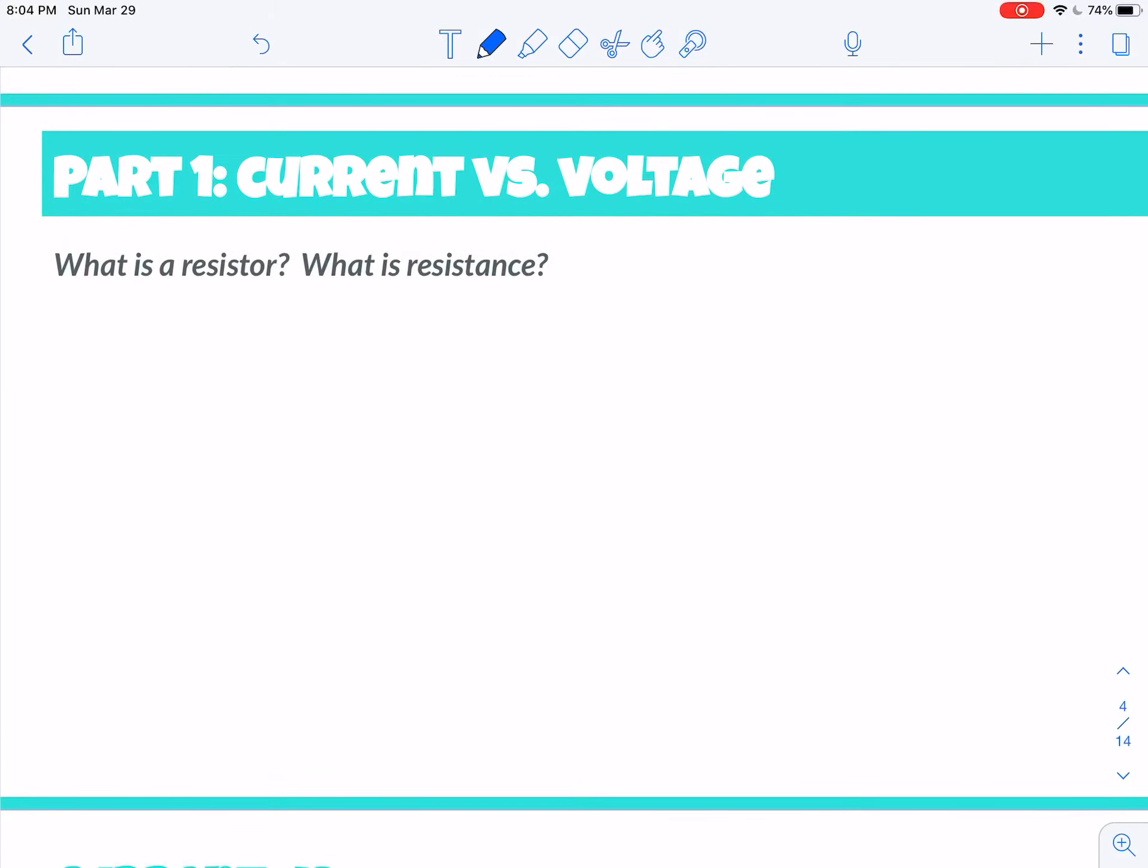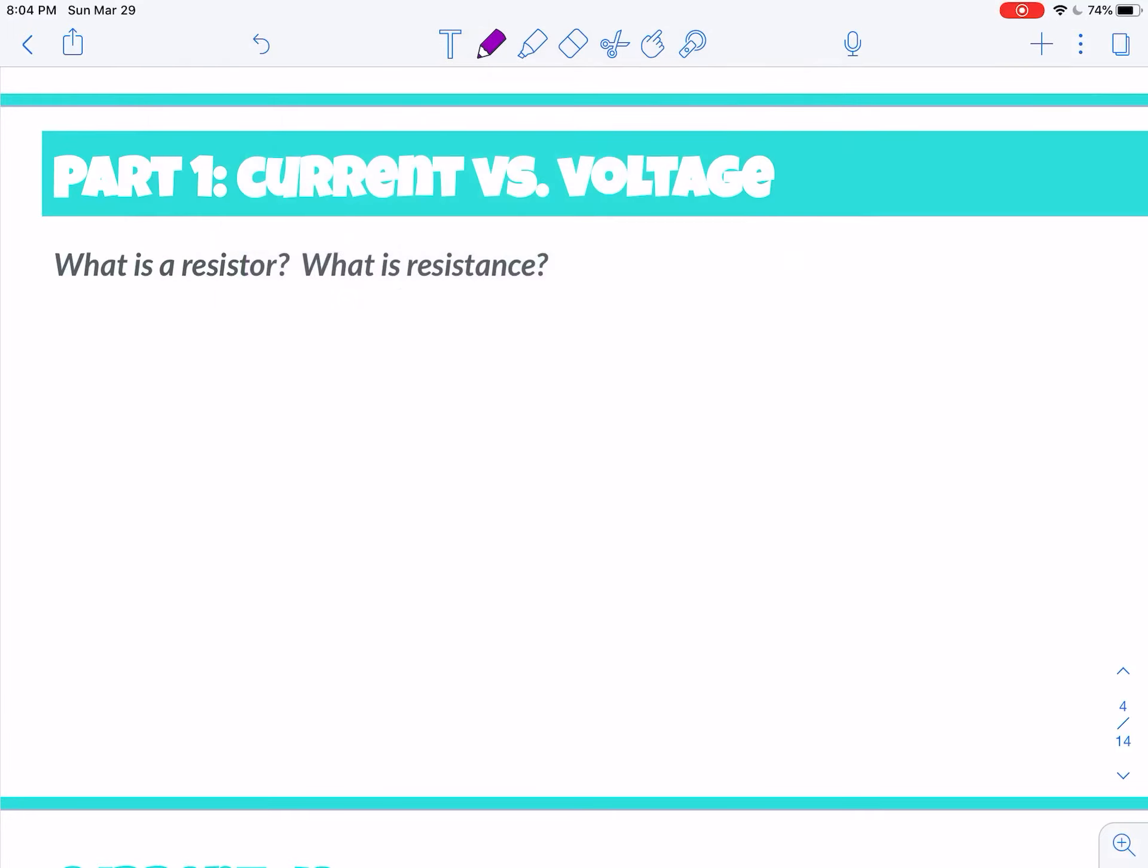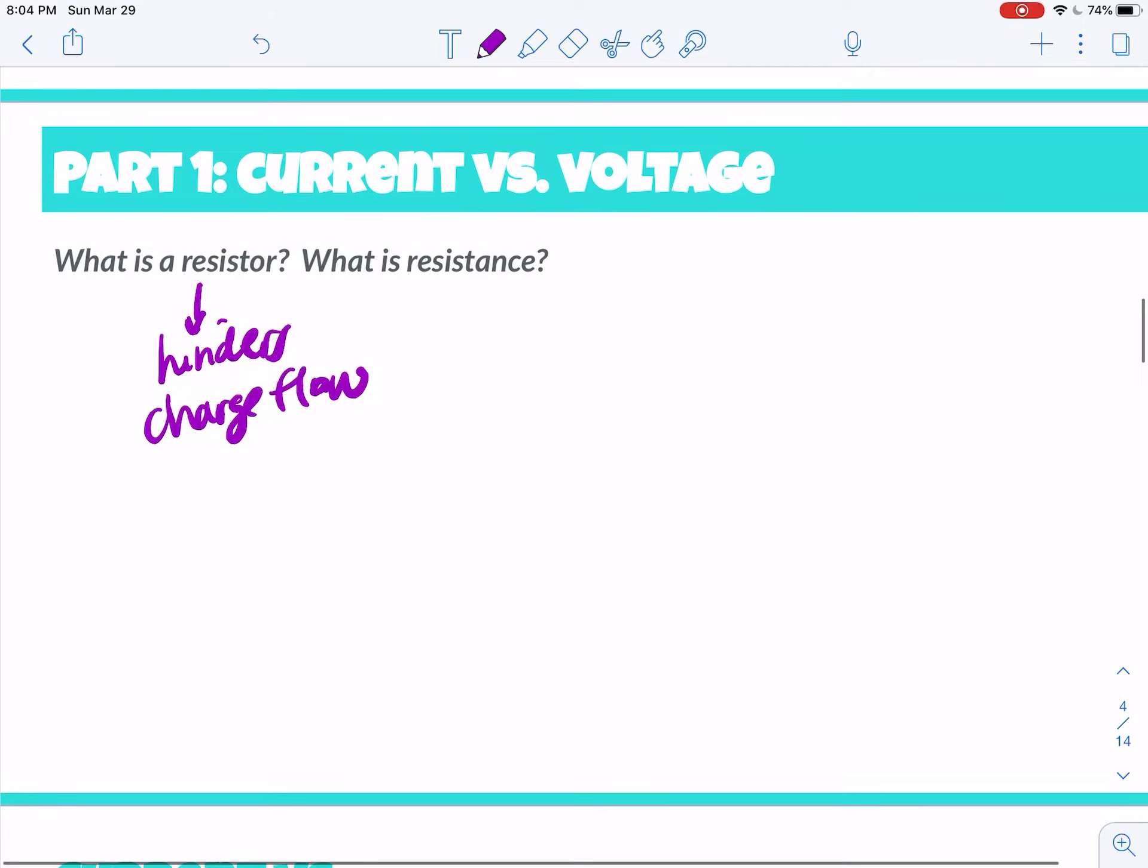I'm not sure if this was in one of the readings or something else, okay? But a resistor is something that hinders the charge flow, okay? A resistor hinders the charge flow, all right? And it makes it more difficult for the, to go. It's measured in resistance, okay?